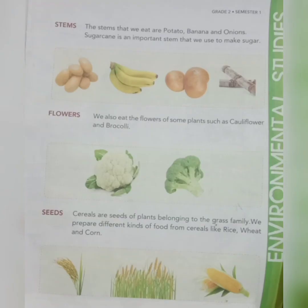Next is stems. The stems that we eat are potato, banana and onions. Sugar cane is an important stem that we use to make sugar.